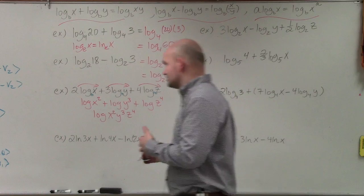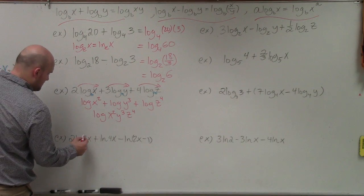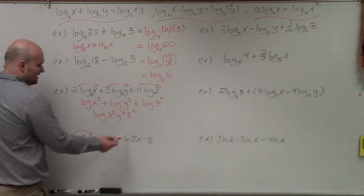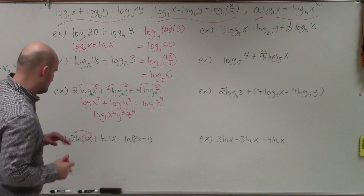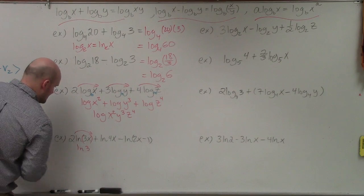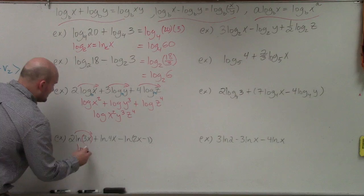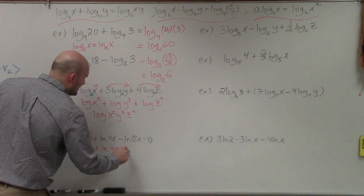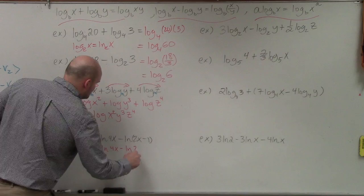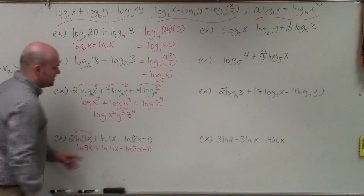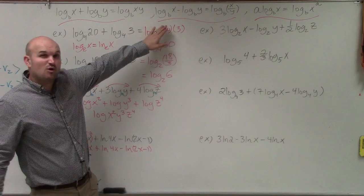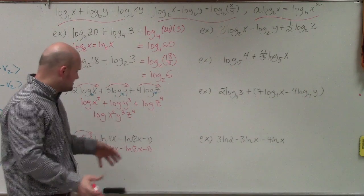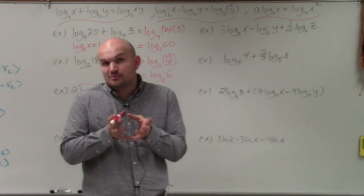Applying the power rule here — the coefficient 2 applies to the whole expression — I rewrite this. So 3 times 3x squared gives 9x, giving me ln of 9x plus ln of 4x and then minus ln of 2x minus 1. What gets everybody confused is they want to use the quotient rule to separate the 2x minus 1, but we can't do that — it's an expression all by itself, and since it's within parentheses, that's what we're dividing by.